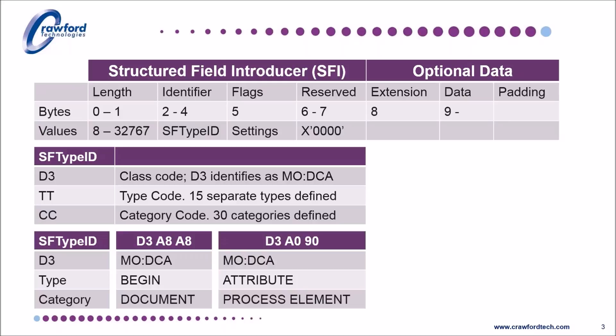D3, A8, A8 is formally defined as a process element attribute. It is the tag logical element, the TLE, where metadata is frequently stored.